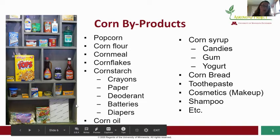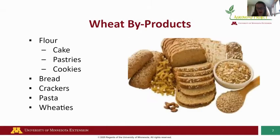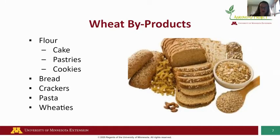The next crop we'll go over is wheat byproducts. Many of the byproducts made from wheat are things we eat or use in baking. Flour is one of the main important byproducts, allowing us to make many desserts and treats. Other foods made from wheat include bread, crackers, and cereals — if you look on the box of any cereal, you're bound to find wheat in the ingredients.